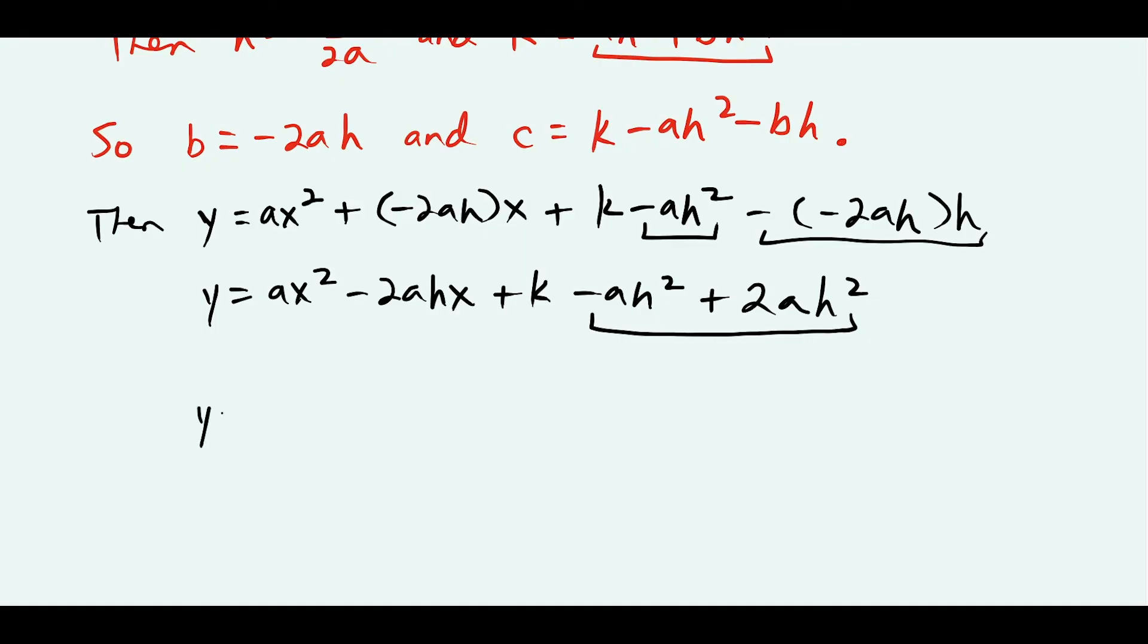In the next line, we have y equals ax squared minus 2ahx. Now this k I'll leave alone for a moment. I want to combine these like terms. So if I have minus ah squared plus 2ah squared, that gives us plus ah squared. And then we have plus k at the end.